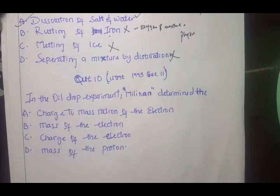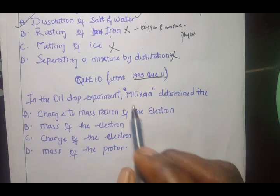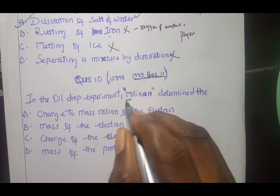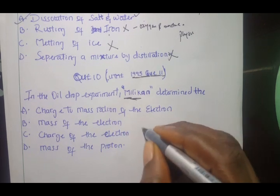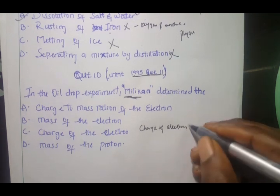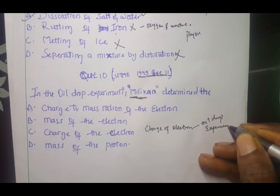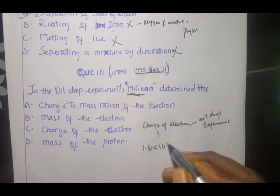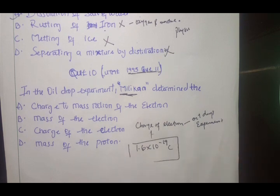The last but not the least for this series, which is extracted from 1995 question 11: in the oil drop experiment, Millikan determined... I've explained this in my live classes on the online video that Millikan actually talked about what we call the charge of an electron. The experiment is called the oil drop experiment, and it was able to tell us that the charge of electron is a value of 1.6 times 10^-19 coulombs.